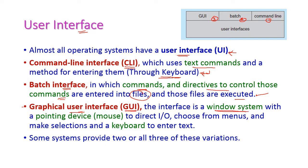In GUI, a pointing device — the mouse — is used to direct input and output systems. Menus allow the user to choose items and make selections. The keyboard is used to enter text. So in GUI, both mouse and keyboard can be used to give commands to the system. Some operating systems provide two or all three interfaces.